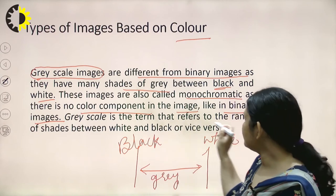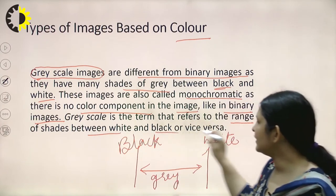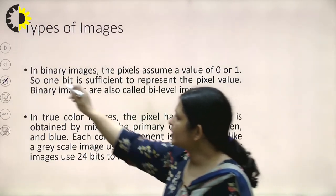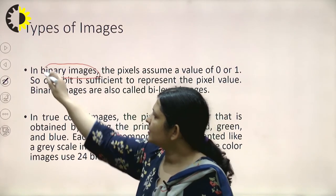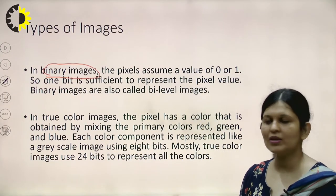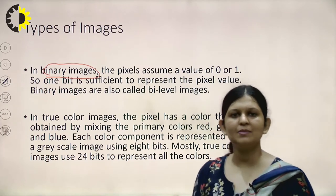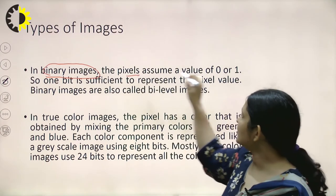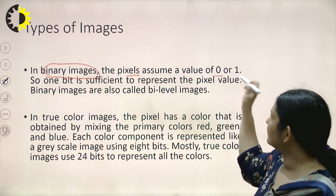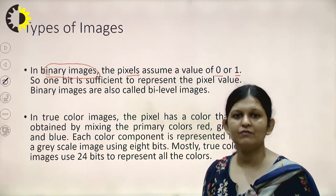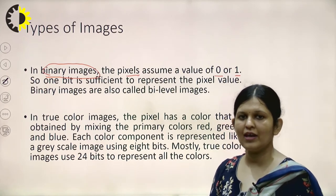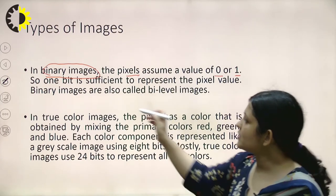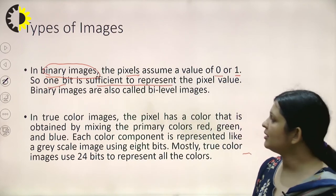Binary images, as the name suggests, can take only two colors — just black and white. The pixel takes only a value of 0 or 1; for example, 0 assigned to black and 1 to white. Only one bit is sufficient to represent pixel values. Binary images are also called bi-level images.